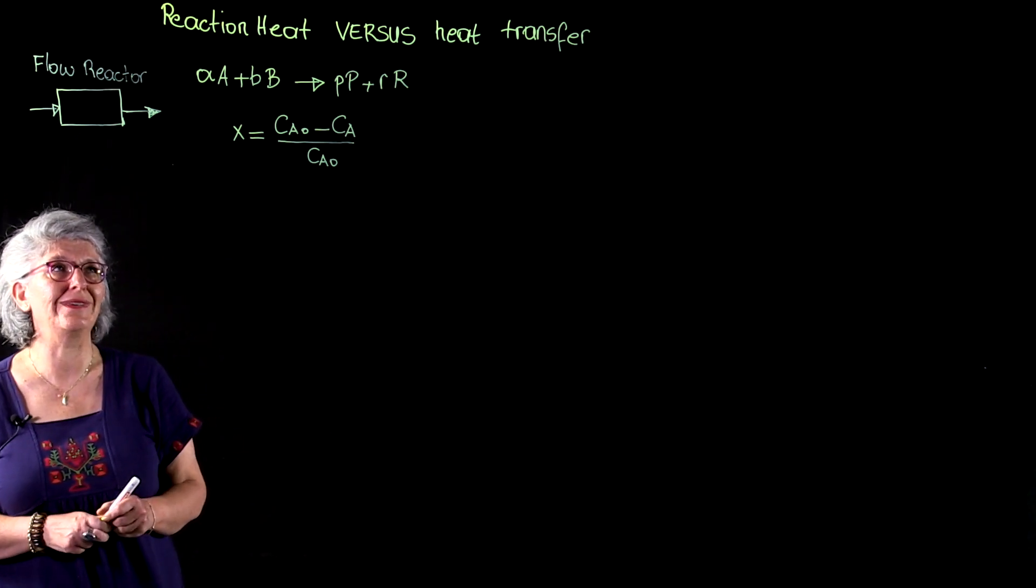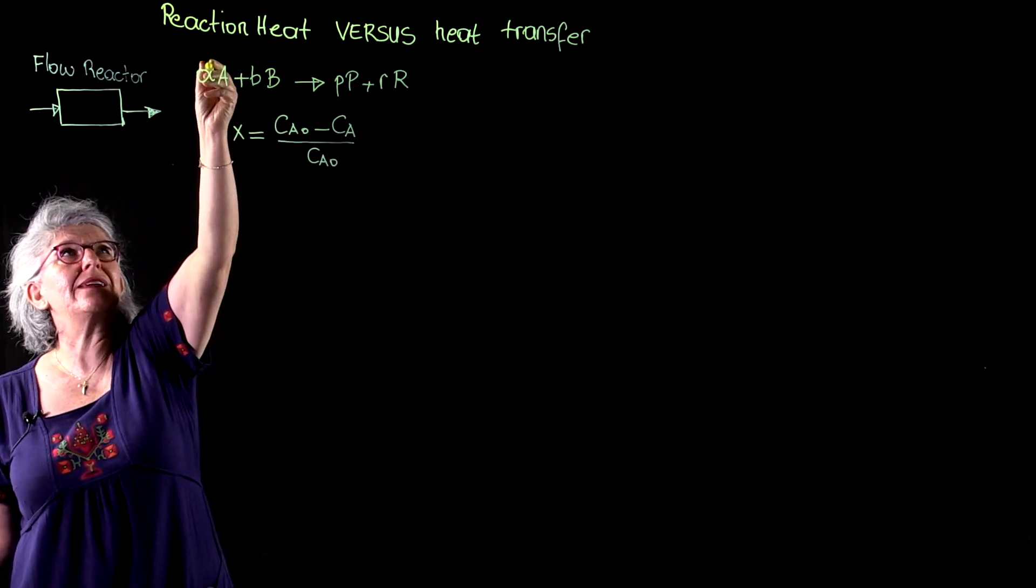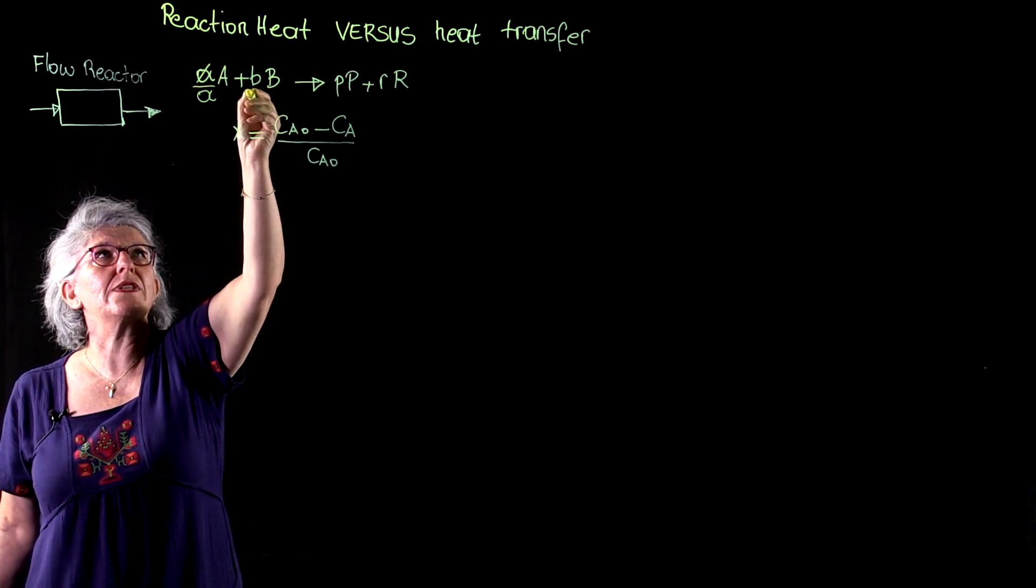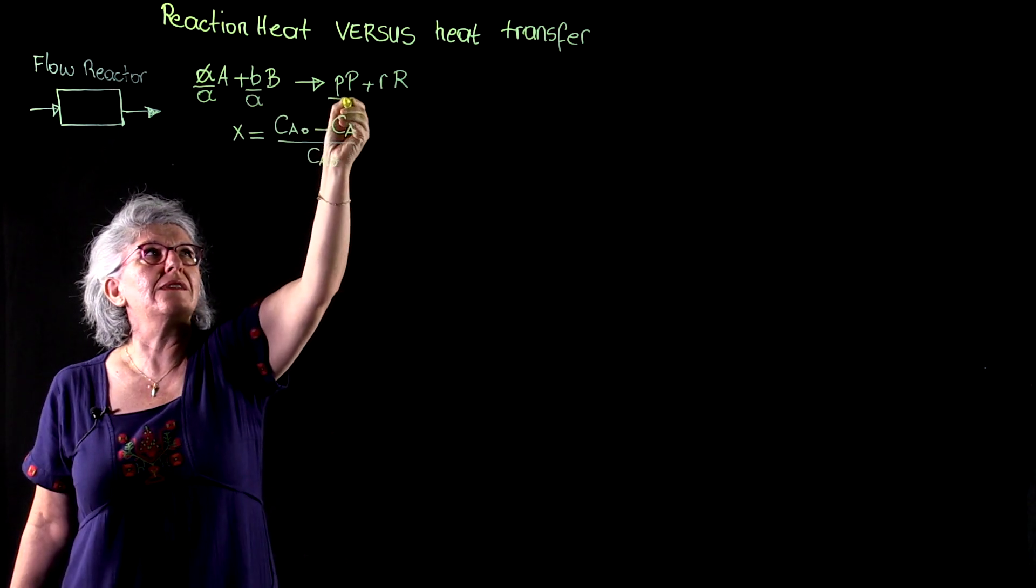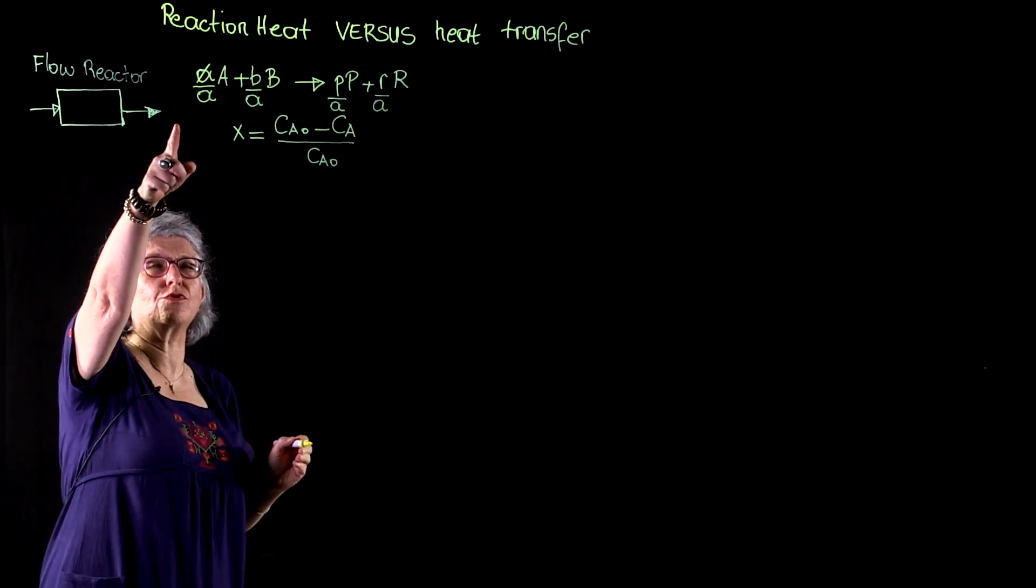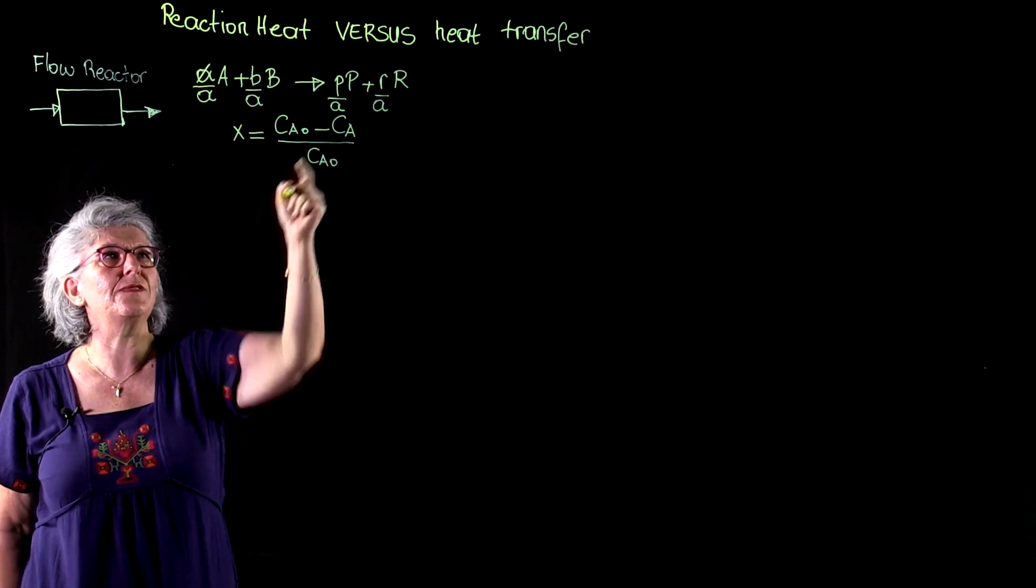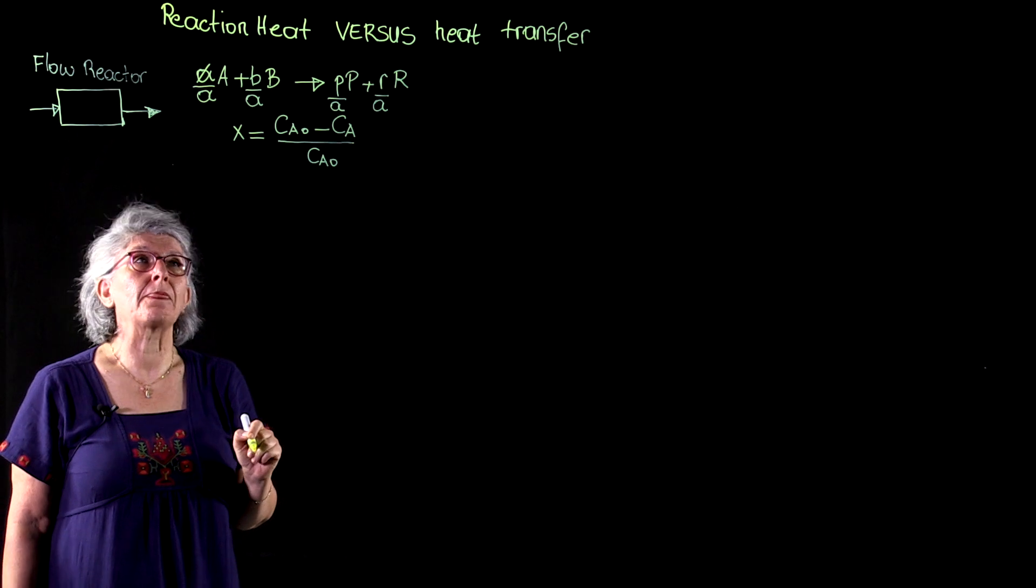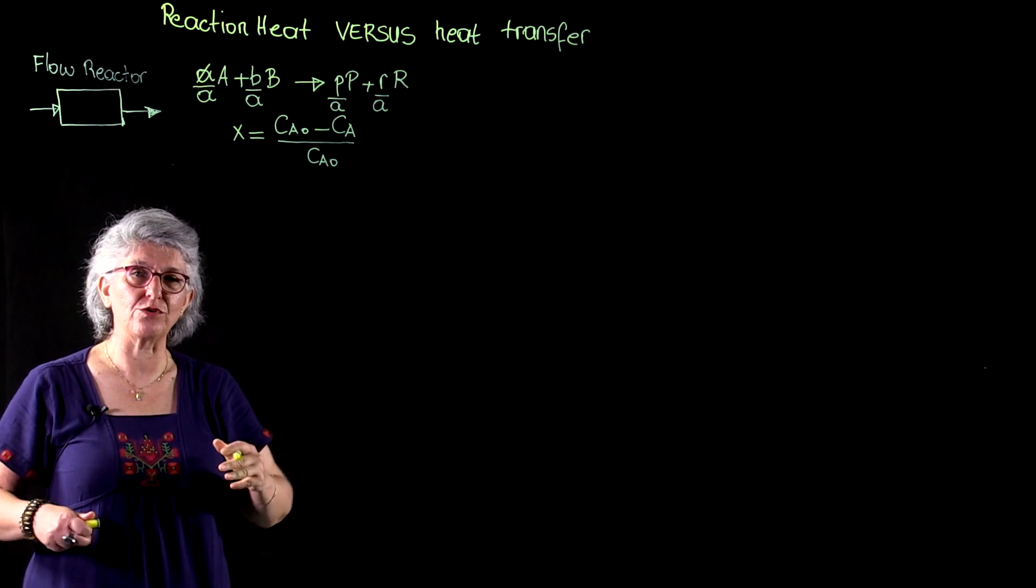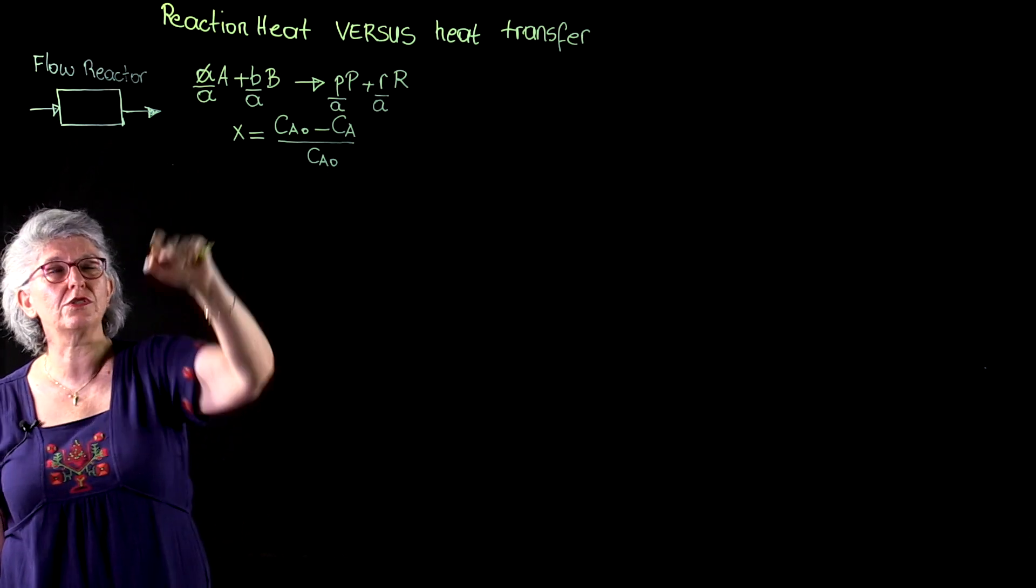First, we are going to simplify this reaction by rendering one of the reactants with unity stoichiometry. And that unity stoichiometry for component A allows us to define the conversion term. This conversion term is going to simplify a complex domain with many different parameters to one single parameter that is called conversion.